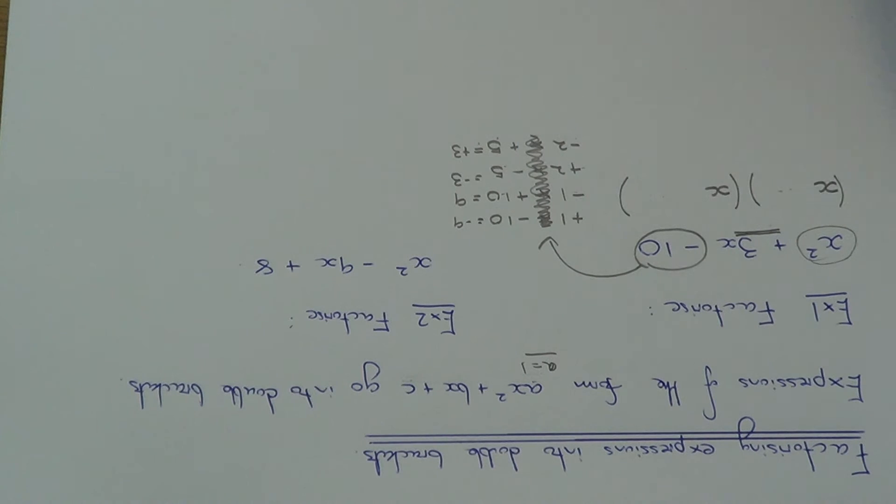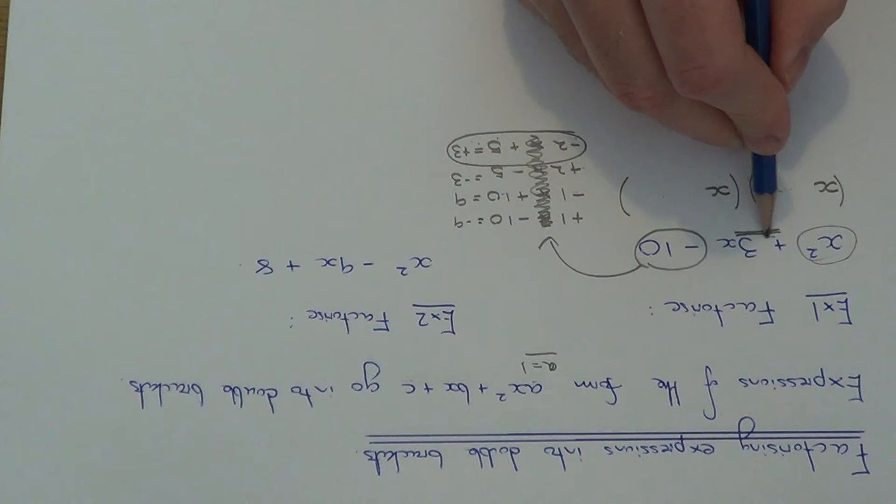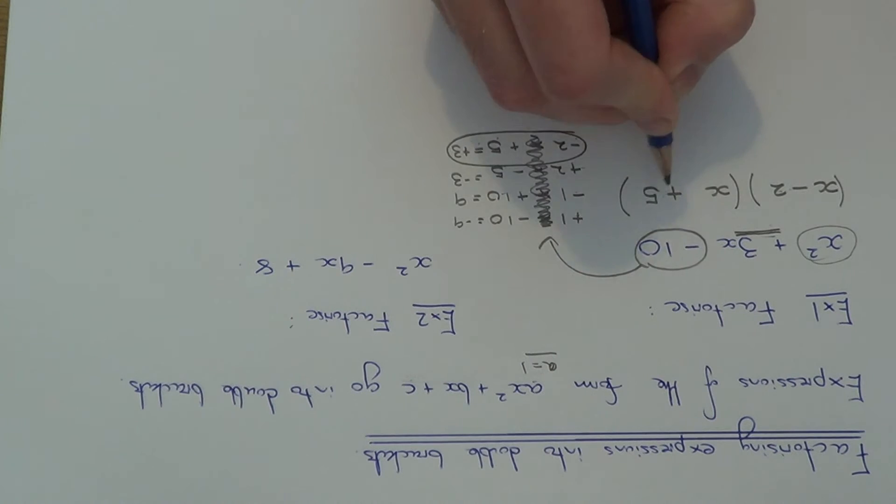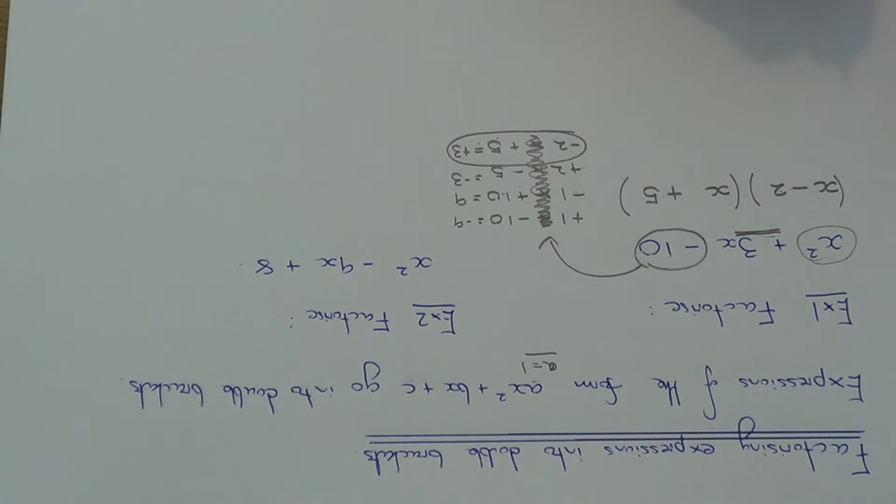So as you can see, the pair that we need is the final pair. Because this gives us 3, which is the number before x. So you can fill in minus 2 and plus 5 inside the brackets. It doesn't matter which way around you put these numbers, as both ways will give you the same answer.